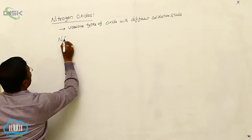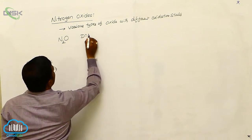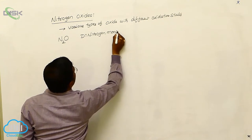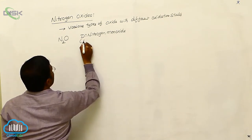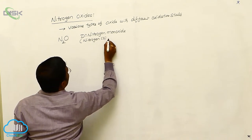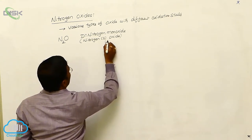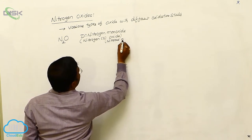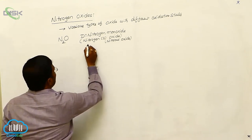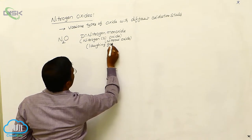The first nitrogen oxide is N₂O. The name of N₂O is dinitrogen monoxide, also called nitrogen(I) oxide, or also called nitrous oxide. In the laboratory, nitrous oxide is also called laughing gas.